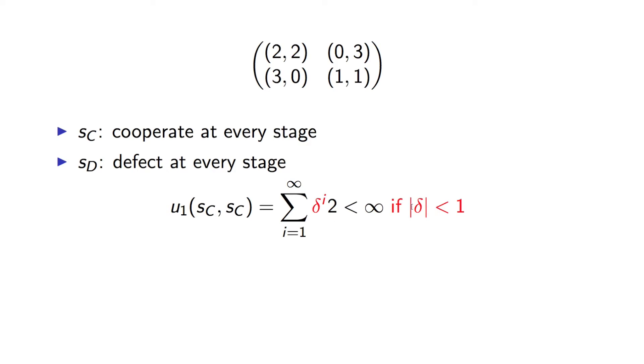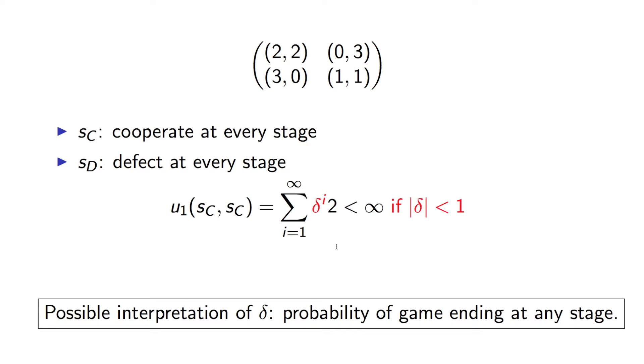A delta that, as long as delta is less than 1, will ensure that this converges. An interpretation of delta is the probability of the game ending at any stage.